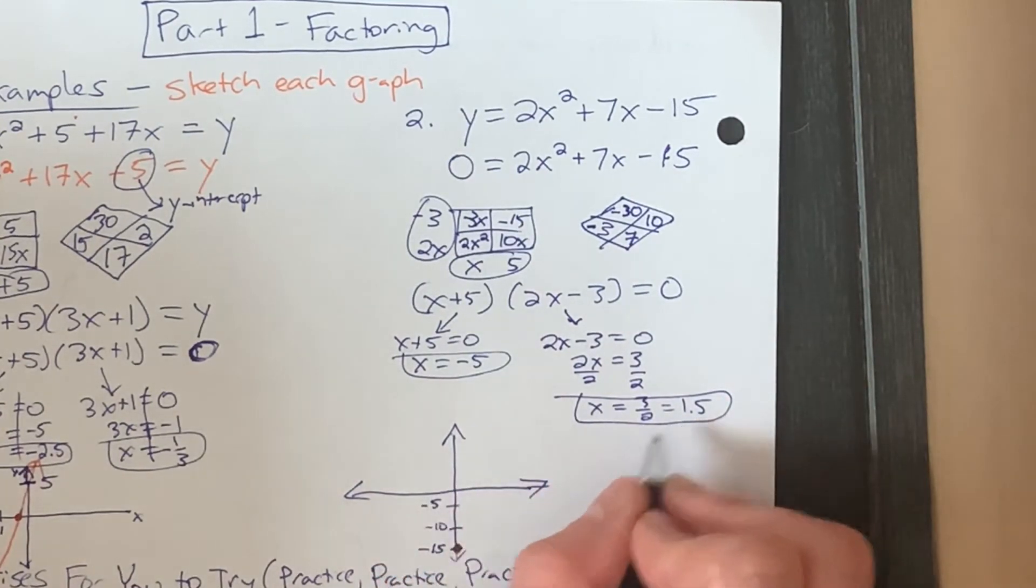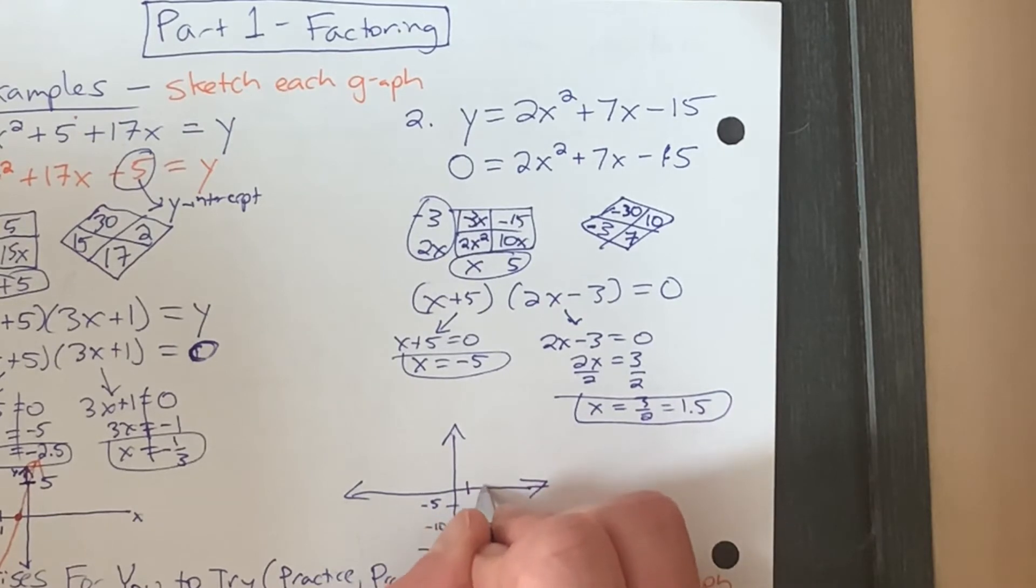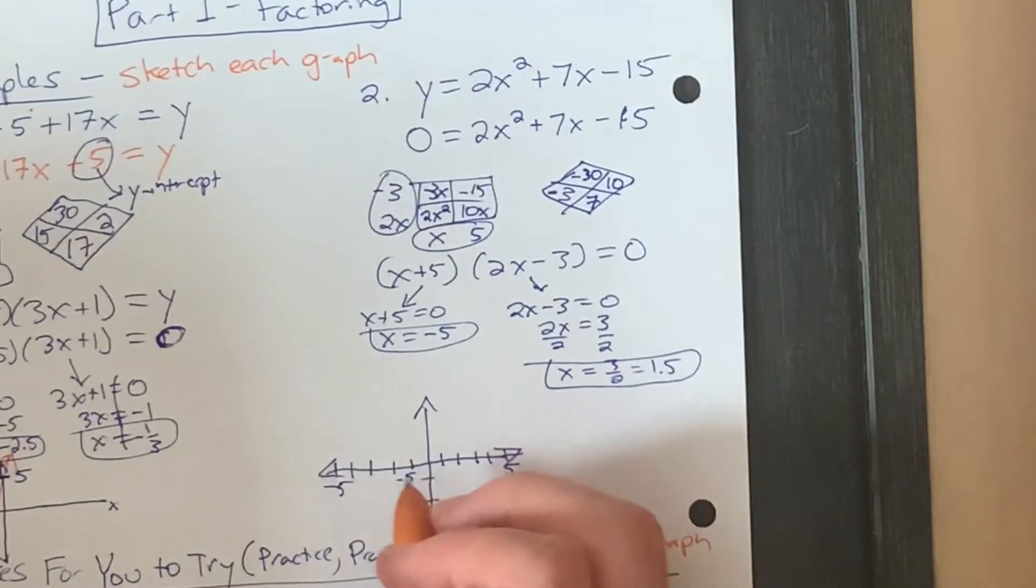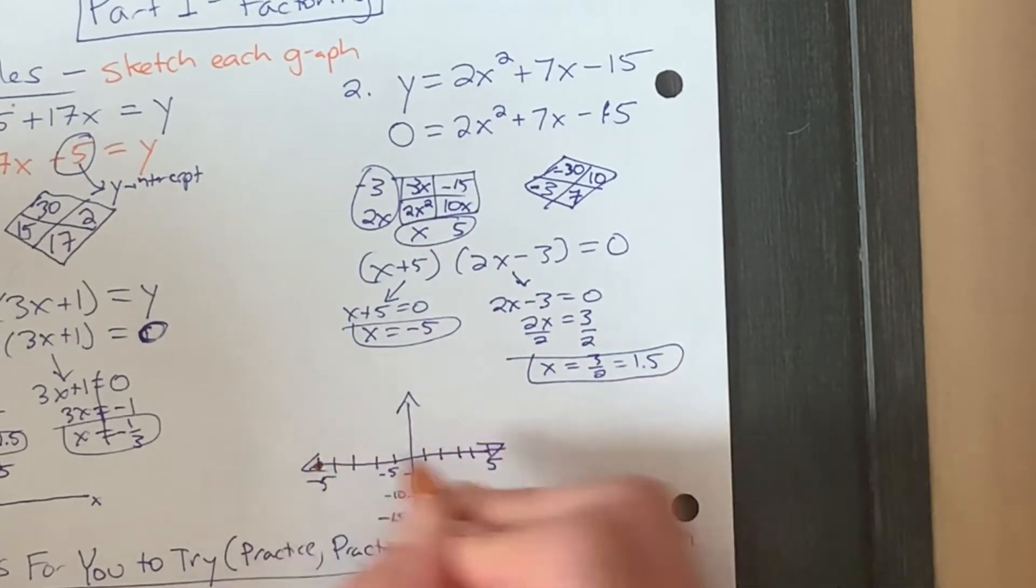Here, let's scale a little bit more widely here, because this is 1.5. So we'll go 1, 2, 3, 4, 5. And then here, negative 1, 2, 3, 4, negative 5 here. So here we have a root at negative 5, and a root at 1.5. y-intercept right here. And this is going to look kind of funky.